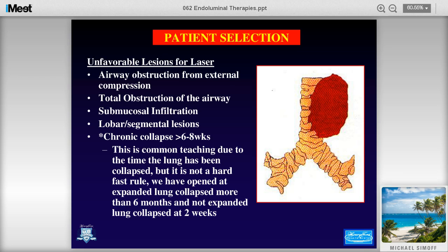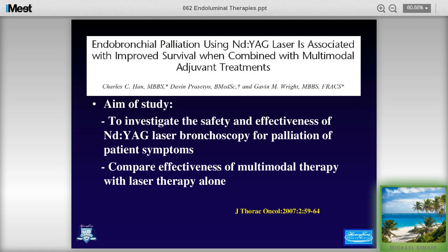Unfavorable lesions include airway obstruction from external compression — you can't use this for external compression. Total obstruction is a questionable area. Submucosal infiltration is interesting: depending on depth, you can use the laser to cause destruction of the submucosa, which we do commonly in carcinoid tumors. Chronic collapse is an interesting problem — the literature says if an airway is closed greater than six to eight weeks you shouldn't try to open it, but I dispute that, having opened airways closed much longer. You have to look at all the physiologic characteristics of the patient.